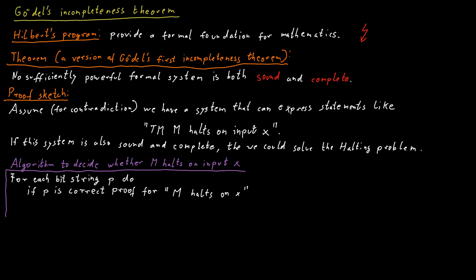we check whether this bit string happens to encode a valid proof for the statement M halts on X. If we find a bit string that is indeed a proof for this statement, then we return 1. We say, yes, we believe M halts on X.